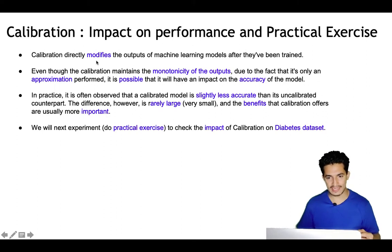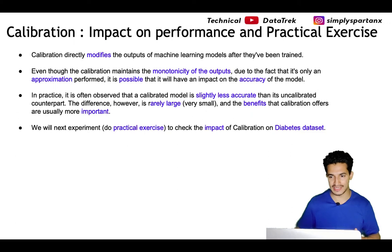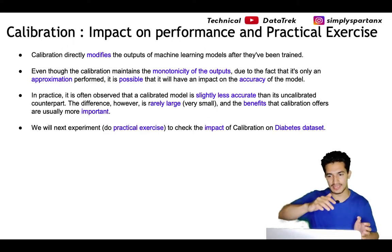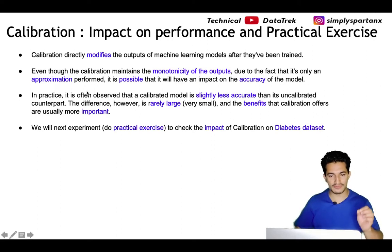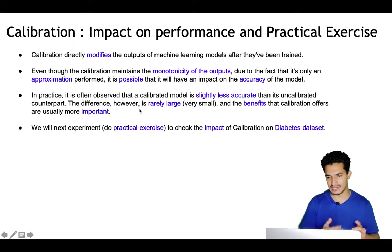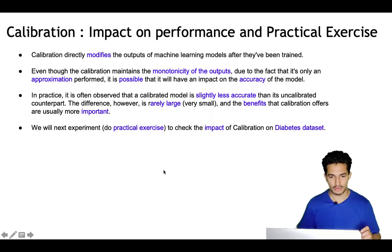Calibration directly modifies the output of the machine learning model, as the output probabilities are passed through a calibration model — either logistic regression or isotonic regression. Even though calibration maintains the monotonicity of outputs, in practice calibrated models are slightly less accurate than their uncalibrated counterparts. However, the difference is rarely large, and the benefits — probabilities representative of true likelihood and normalization across combined models — are more important.